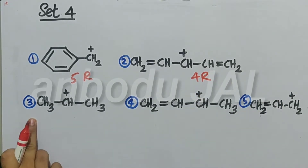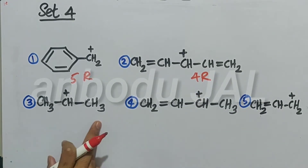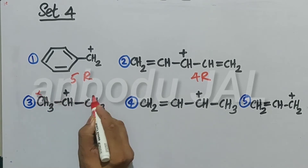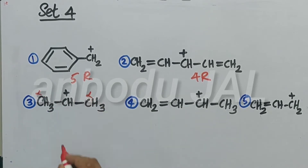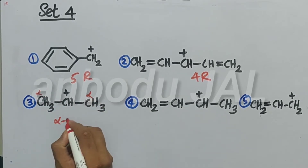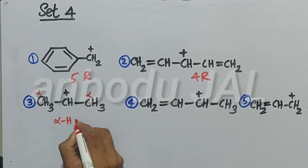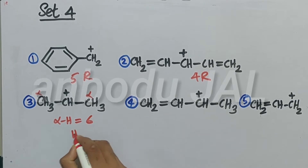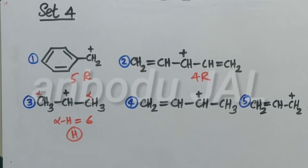In the third compound, there is no resonance, but this is alpha and this is alpha. That is, alpha hydrogen equals six, so six hyperconjugation structures are possible.